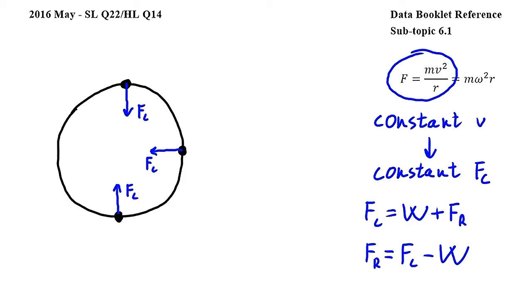I will work a bit further and show this thought process using vectors. When the object is at the top of the circle, W looks like this.